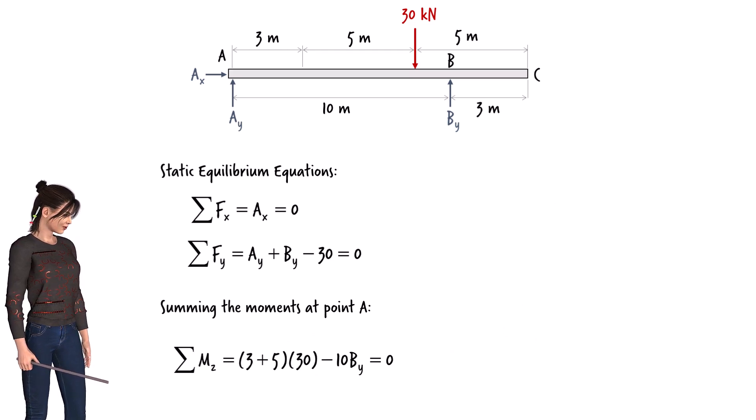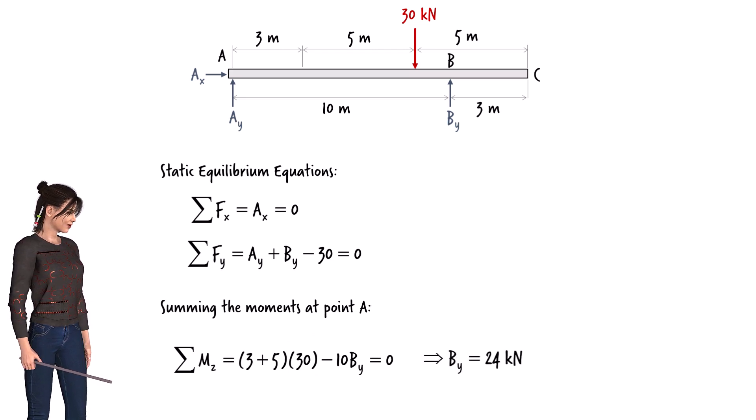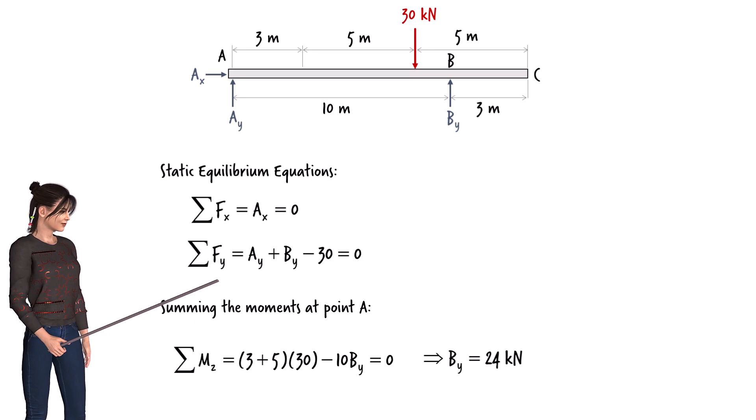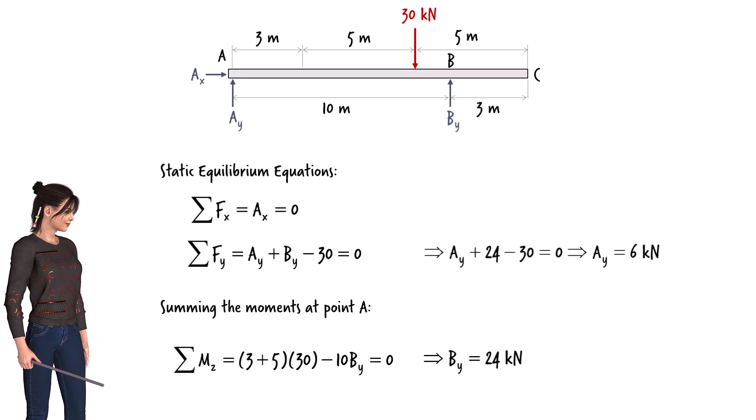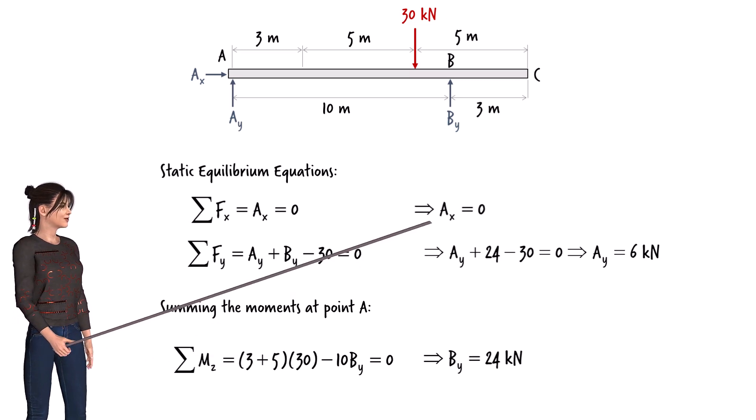Solving the moment equilibrium equation for B we get the reaction at B. We can then solve for A using the second equilibrium equation, and the first equation gives us Ax equals 0.